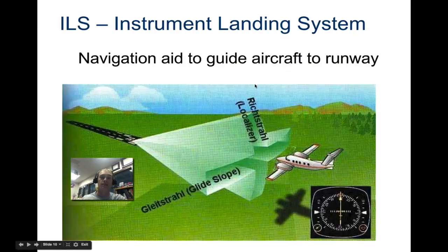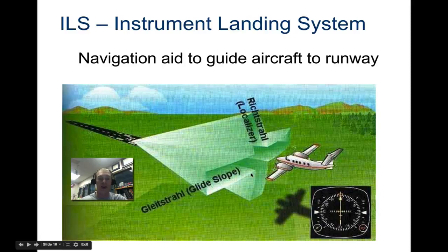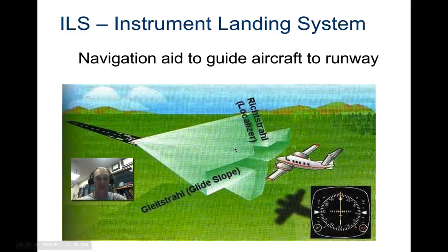ILS stands for instrument landing systems. These are navigational aids to guide aircraft onto the runway. They're very useful because they help pilots know whether they need to move right or left, or up or down, to achieve a good approach angle to hit the runway. You'll learn more about this in the next presentation.